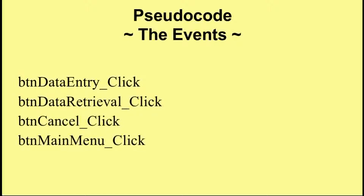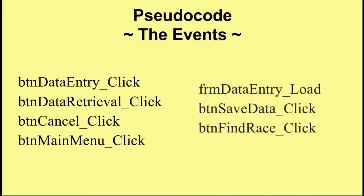The events fall into two categories. The first category just takes the user from one form to another: button data entry takes the user from the main menu to the data entry form, button data retrieval takes the user to the data retrieval form, button cancel goes back to the main menu, and button main menu returns from the data retrieval form. The other three events are different — form data entry load, button save data, and button find race.